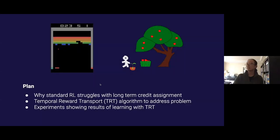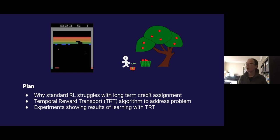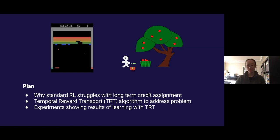The plan is three parts: first I will describe why standard RL struggles with tasks involving long delayed rewards; next I will describe the Temporal Reward Transport algorithm, or TRT, that I've been working on to address this problem; and finally I will share some results from experiments using TRT.